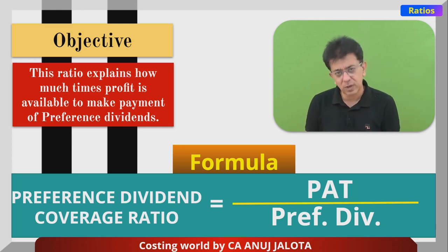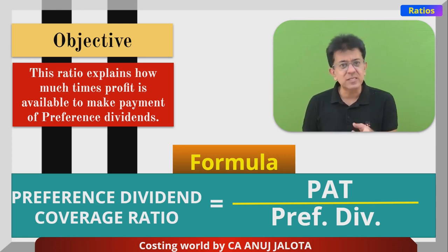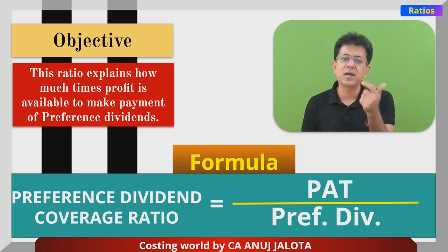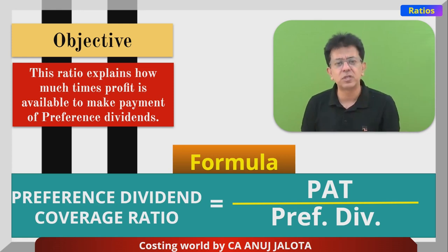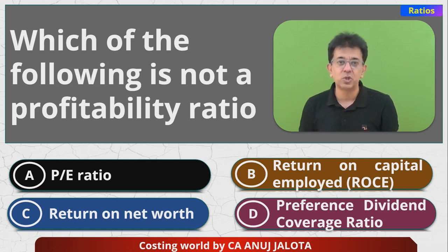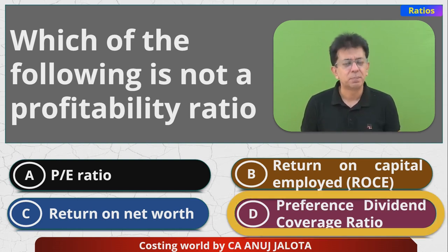This is a coverage ratio that speaks about whether you have enough money to pay your preference dividend — higher the better. Therefore, out of the four options, this is not a profitability ratio; it's a coverage ratio. So the answer is D. That's the correct answer. See you all next time, bye, take care.